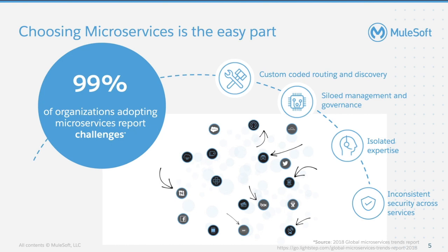Suddenly there is a large number of microservices which need to communicate with each other. The management and governance of these services are siloed because different departments in the organization have ownership of these microservices. Therefore, there is no comprehensive across-the-board governance. It is also isolated expertise — some of these microservices are written in programming languages where the company has only an isolated skill set. Lastly, there is inconsistent security across these services. These microservices need to communicate with each other, and it is critical to have a well-thought-through security framework across them.